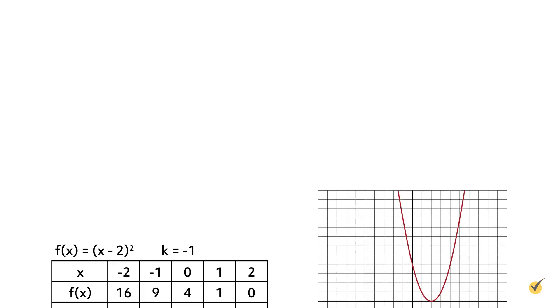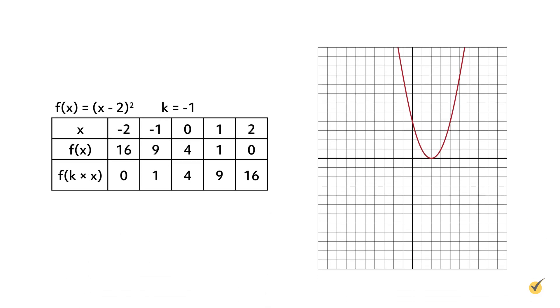Now let's reflect the function f(x) equals x minus 2 squared across the y-axis. Using the formula f(k times x), multiply the x value inside parentheses by a number k that is less than 0 — in this example, k equals negative 1. The original function in red is reflected across the y-axis by multiplying the x value in parentheses by negative 1. The reflection is shown in green. If the coordinate plane were folded along the y-axis, the two functions would align.